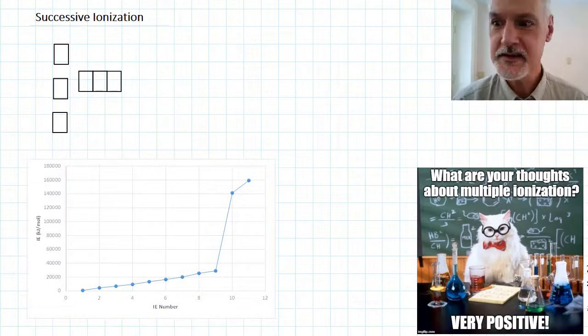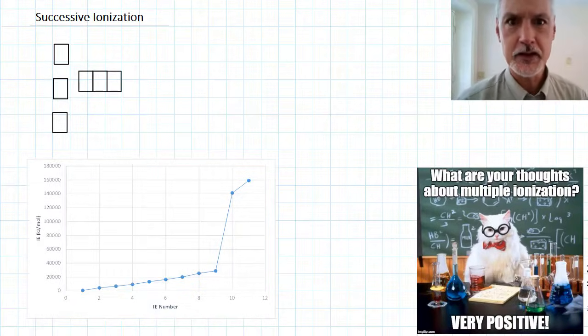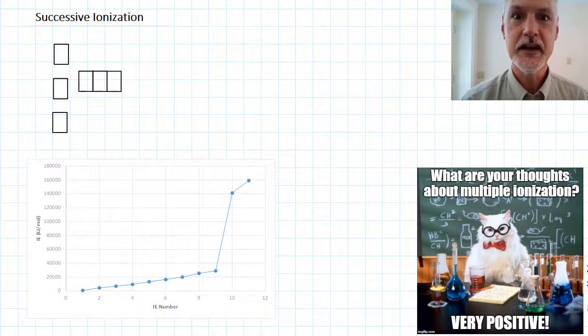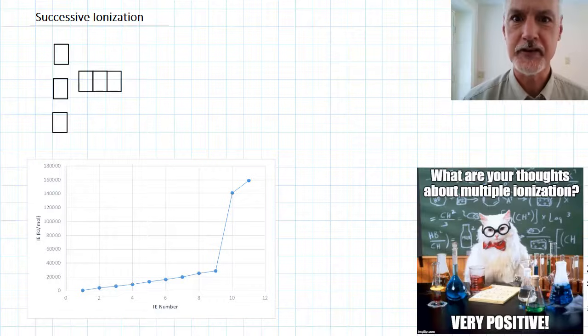Hi and welcome to this program on trends and ionization. I want to look at two trends. In one trend we focus on simply one element and continually remove electrons from it. We call this successive ionization.